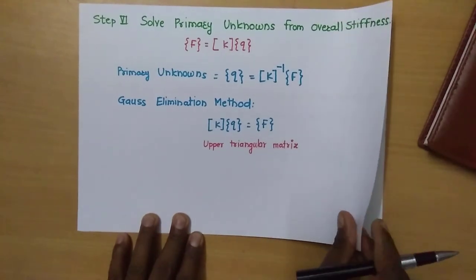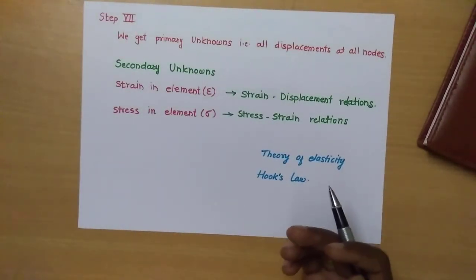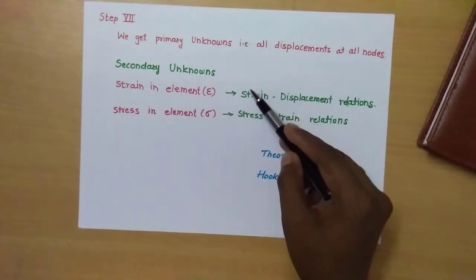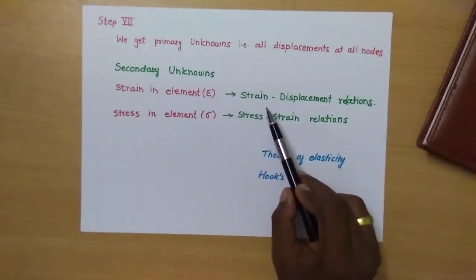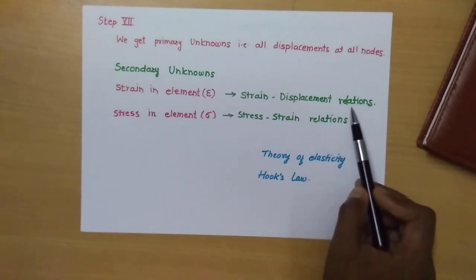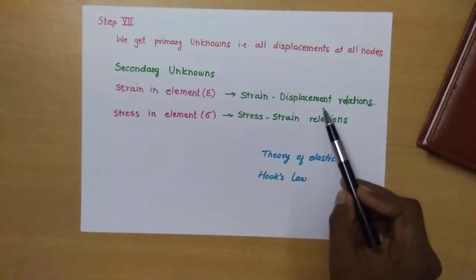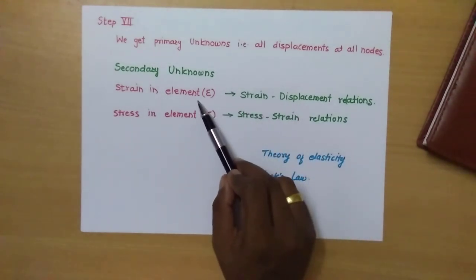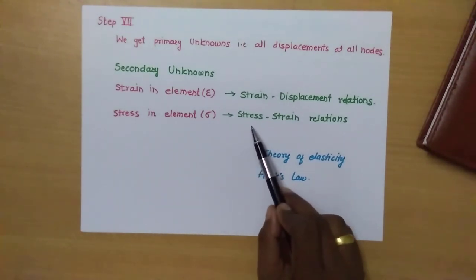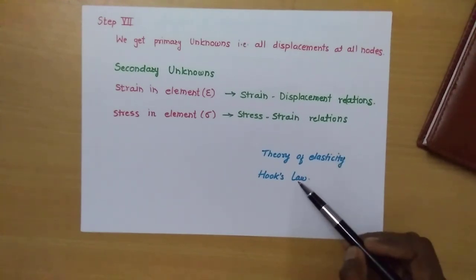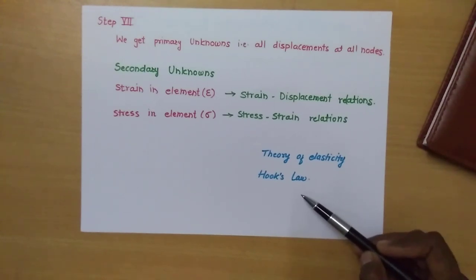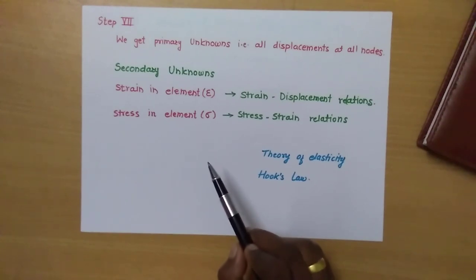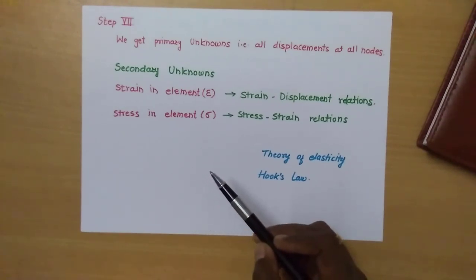Step seven is to find the secondary unknowns. Once we have the displacement vector, we use the strain-displacement relationship — derived from the theory of elasticity — to find strain (epsilon) in each element. To find stress, we use the stress-strain relationship derived from Hooke's Law, applicable for 1D, 2D, and 3D. If we need stress values at points inside an element rather than at nodes, we use the shape functions to interpolate those values within the element.